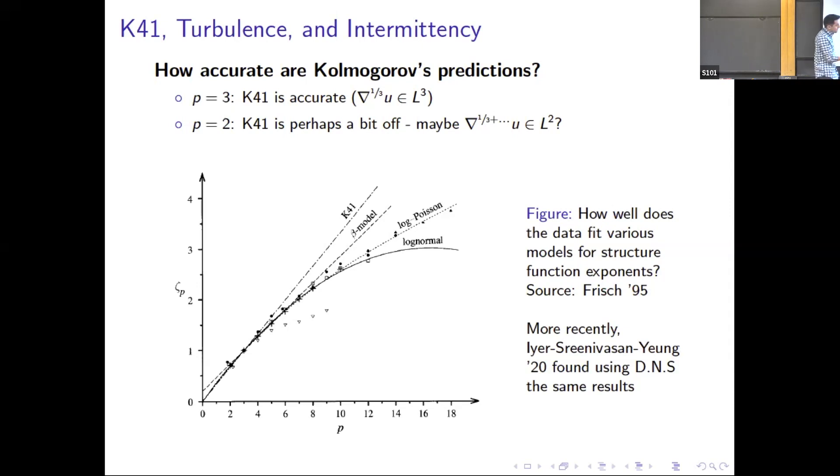People work on this even in recent years. A year ago, Srinivasan and Yung did a direct numerical simulation and measured this sort of L^2 regularity, and they got a number which was bigger than Kolmogorov's prediction. So K41 is the line p on 3, and then these are other guesses as to what the correct scaling should be. There's some experiments plotted here, although it's a little bit hard to see at p equals 2. These were taken from experiments like measurements. Kolmogorov's one-third came from mathematical argument, not from the experiment. It's a phenomenological theory based on certain assumptions which may or may not be valid.